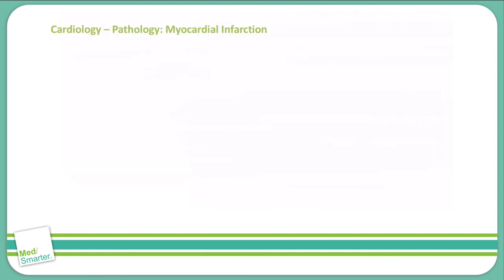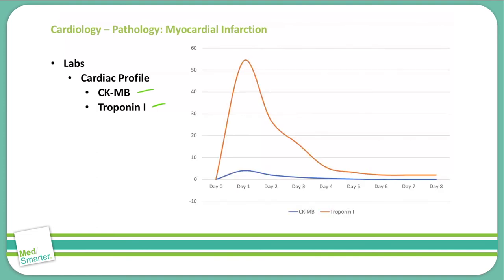When a patient presents to the emergency department with chest pain and symptoms that could be associated with a myocardial infarction, one of the common labs ordered includes a cardiac profile. The cardiac profile includes a CKMB, or creatine kinase-MB, which is typically found within the myocardium of the heart but also found elsewhere in the body, and a Troponin-I. The CKMB level, shown here as the blue line, rises and falls fairly quickly after infarction.